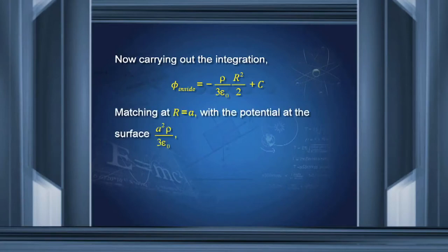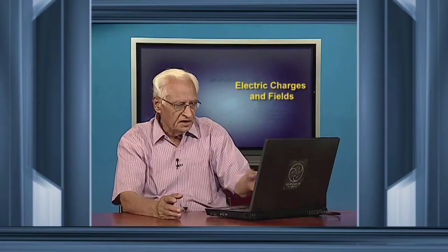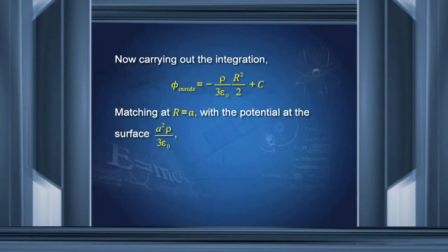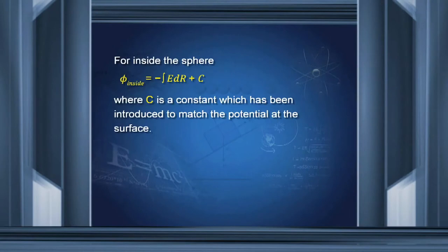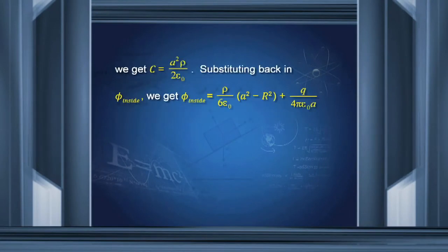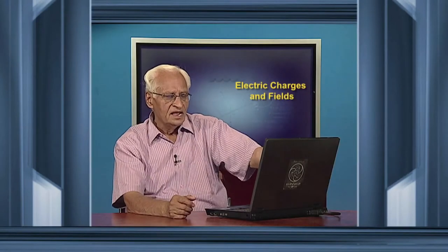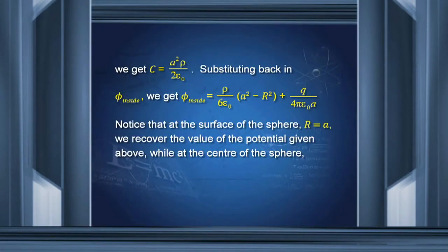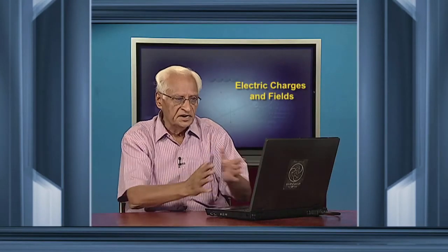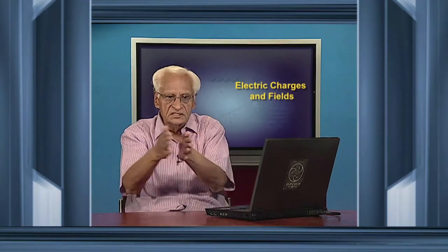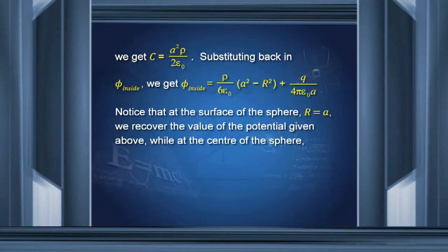Now we match φ inside and φ at the surface so there is no discontinuity. Matching the two gives us the constant C, and substituting back, we get φ inside equal to ρ/6ε₀ times (A² minus r²) plus q/(4πε₀A). You can verify this is correct: if A equals r, that is we are at the surface, the first term vanishes and we recover the surface value. So there is no discontinuity.